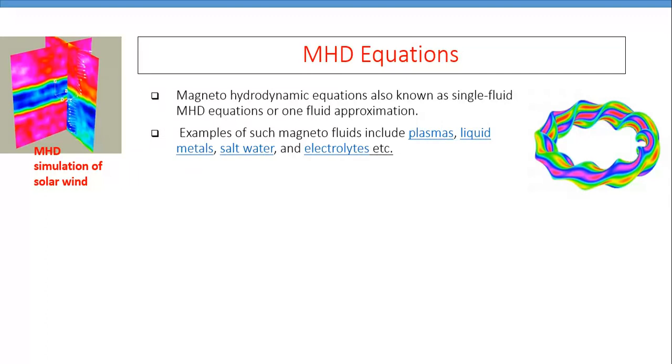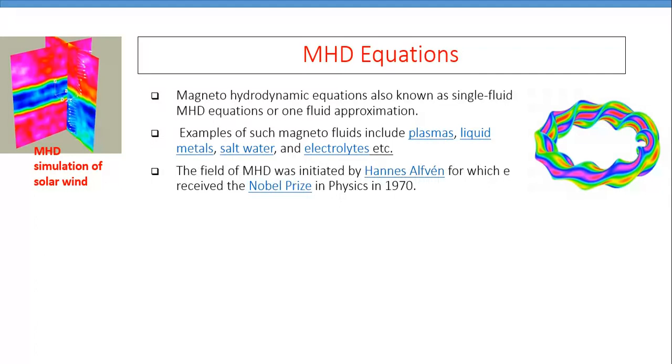Examples of such magnetic fluids include plasma liquids, metals, salt water, and electrolytes, etc.